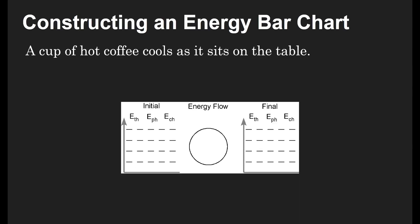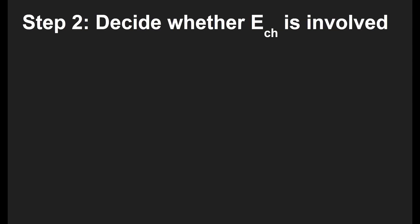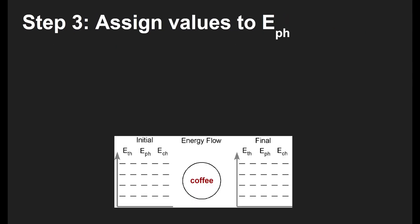So our example is a cup of hot coffee cools as it sits on the table. So our system here is going to be the thing we're looking at, which in this case is the coffee. So we'll write that in the middle. And then of course, everything else, the table, the air, all of that is the surroundings. All right, now, we need to think about is chemical energy involved. We start with coffee, we end with coffee cooled down, it's still coffee, there's no new substances created. So no chemical energy was involved. And, you know, pro tip, it's never going to be involved this unit. But this is something you might want to think about in a couple of units.